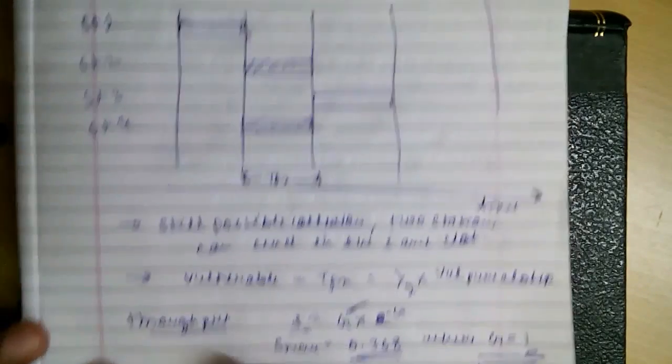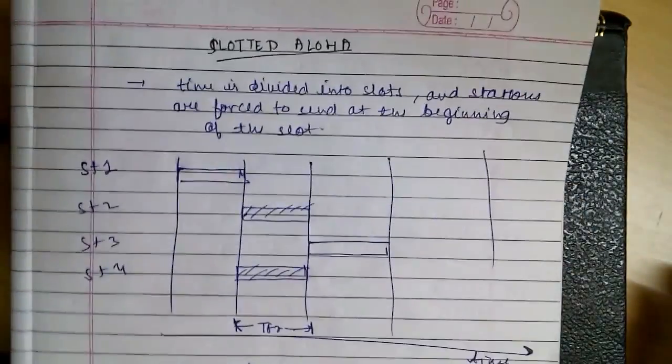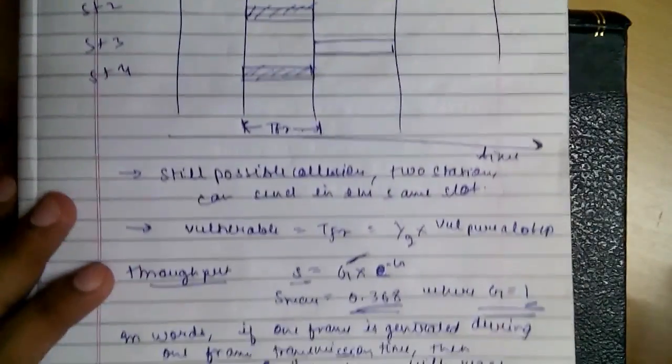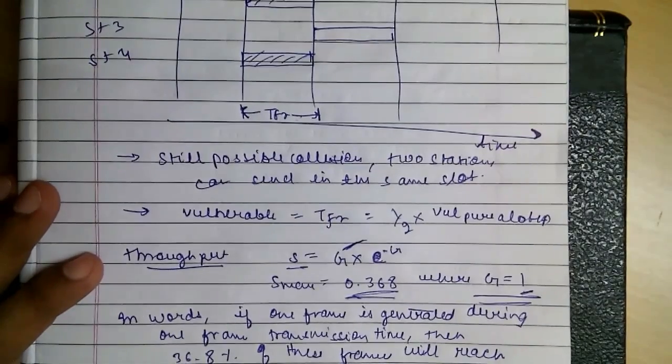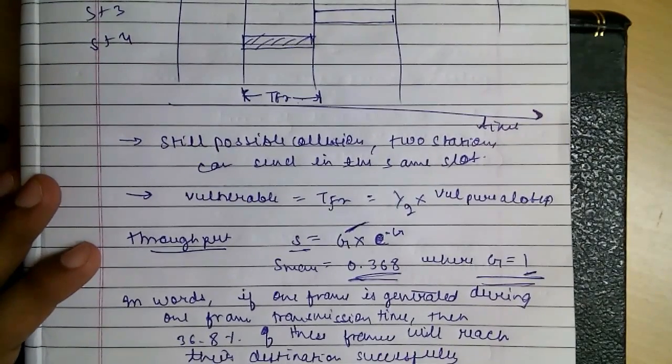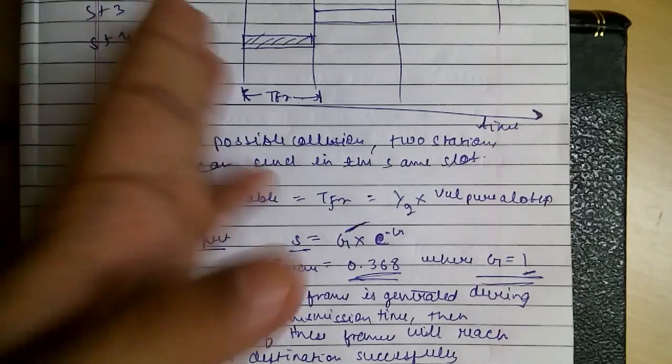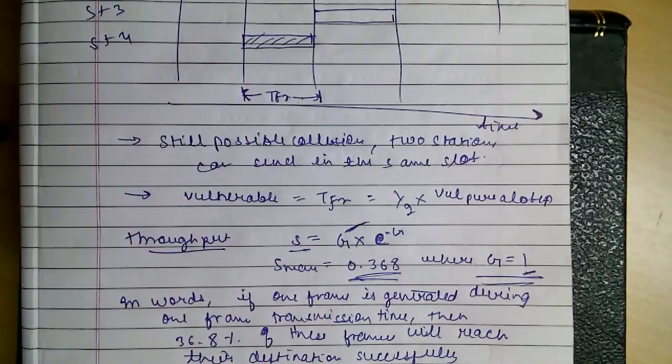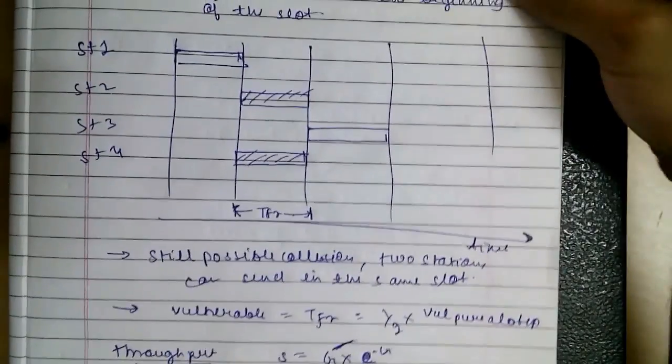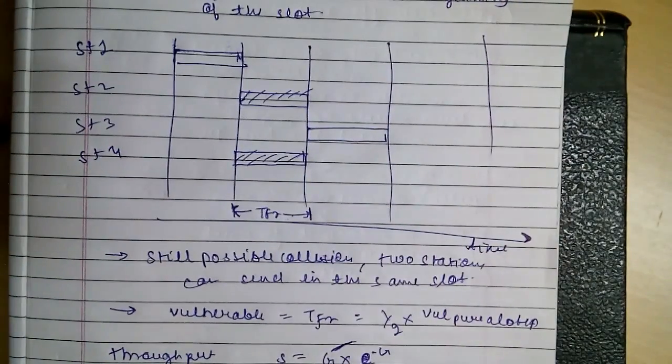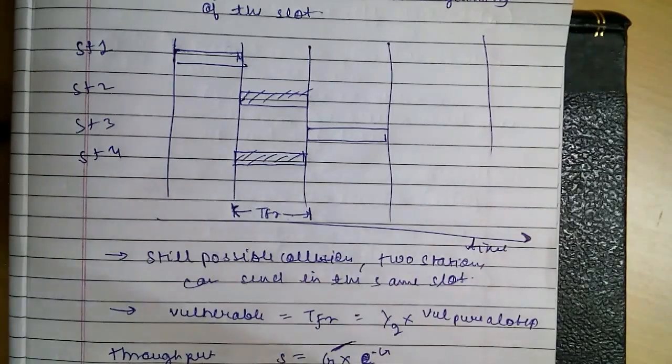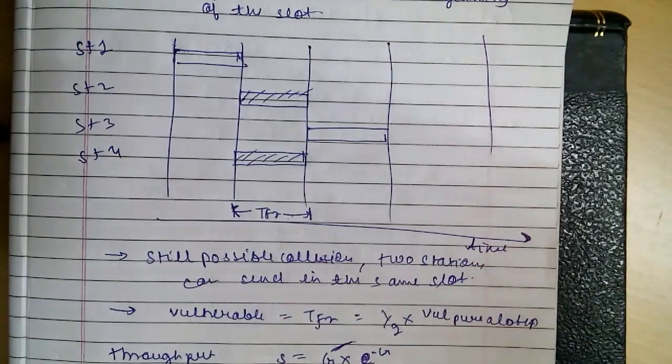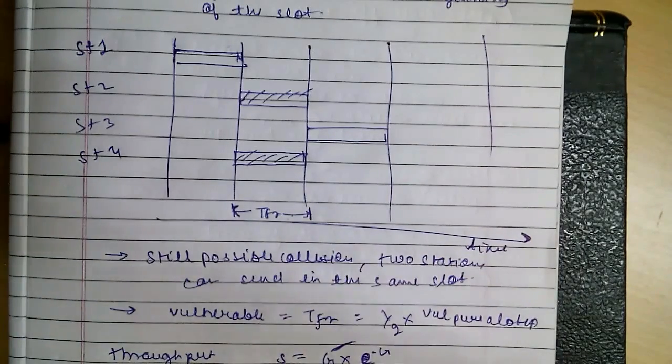So this was slotted ALOHA, and the one before it was pure ALOHA. They used to send whenever they have the data. Slotted ALOHA is a little better as it sends at the beginning of the slot only. Both don't care about the current state of the channel. So the next one we will be looking at is CSMA, which checks whether the station is idle or not before sending its data.